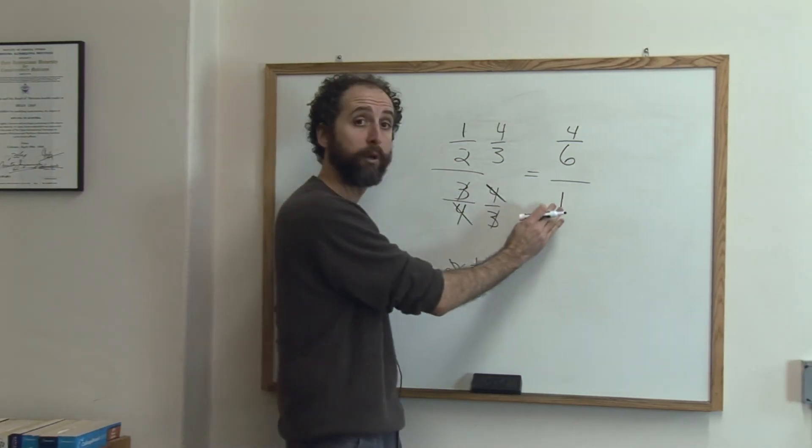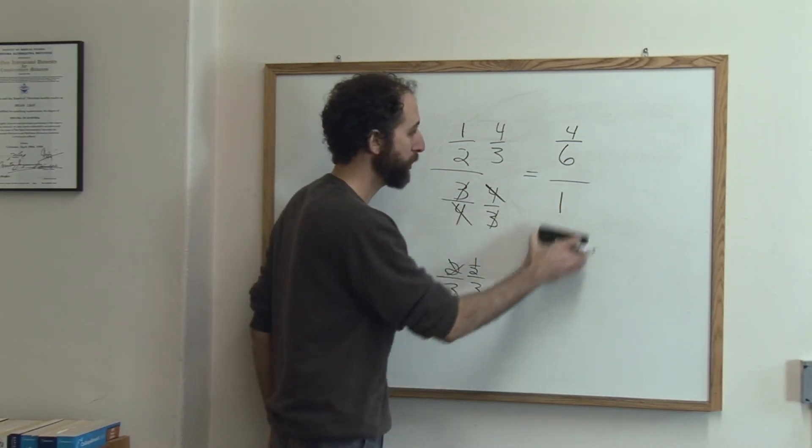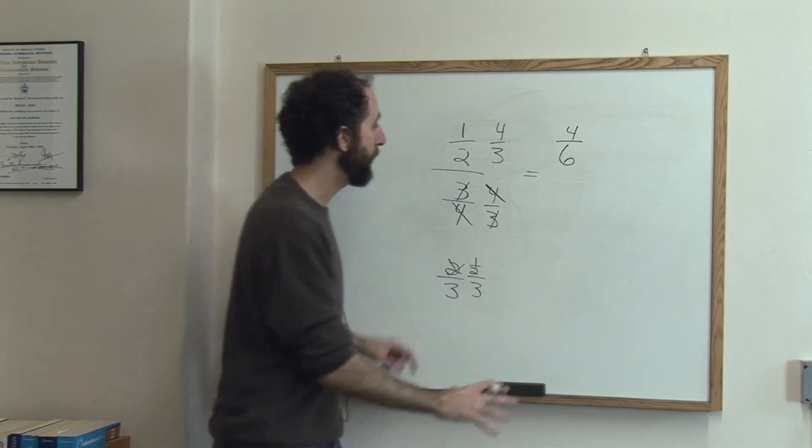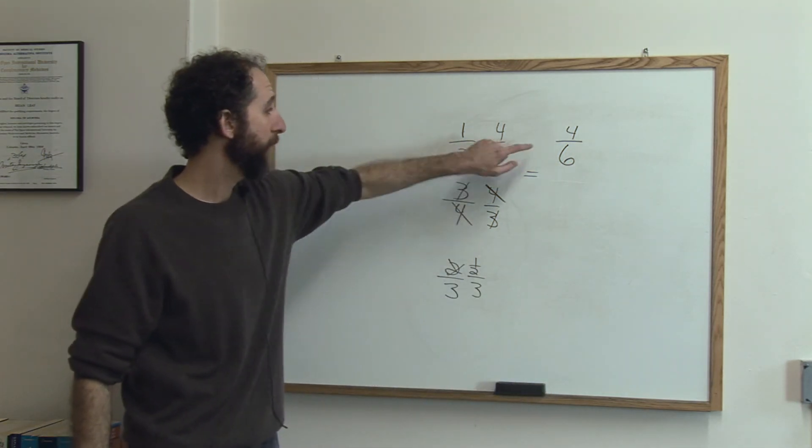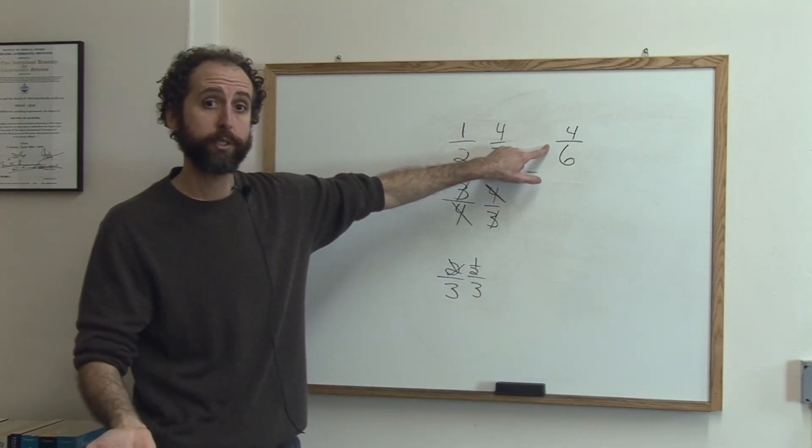So I get 4 over 6 over 1. Now, in a fraction, when you have over 1, you really don't need it. So we can actually eliminate that part. So the answer is, this complex fraction actually just simplifies to 4 sixths.